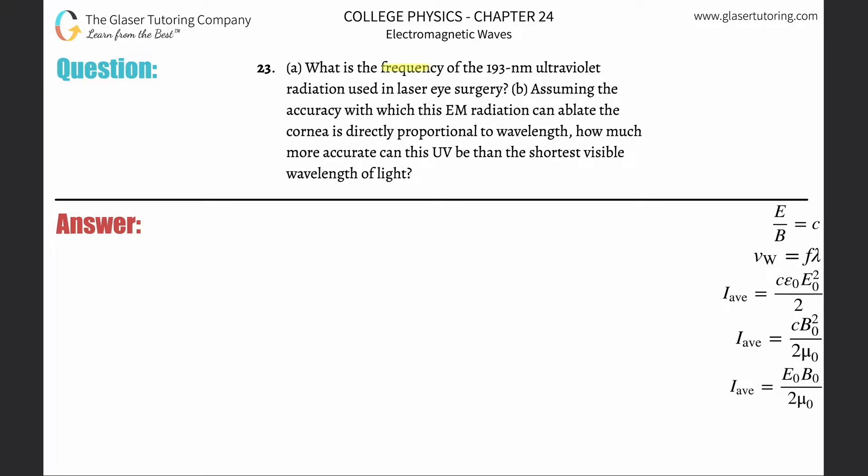Number 23, letter a: What is the frequency of the 193 nanometer ultraviolet radiation used in laser eye surgery? All right, so here's another time we're going to use the formula velocity equals frequency multiplied by the wavelength. To find the frequency, divide out the wavelength from both sides.